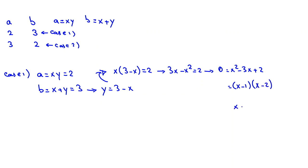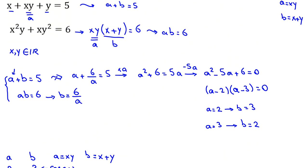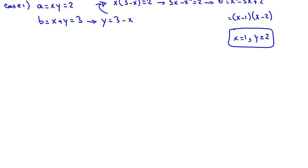So one case is x equals 1. If x is 1, then we replace, y will be 2. So one answer is this. Second answer: if x is 2, we can see that 1 and 2 works. 2 plus 2 plus 1 is 5, 4 times 1 is 4, 1 times 2 times 1 squared is 6. You can check that it works.